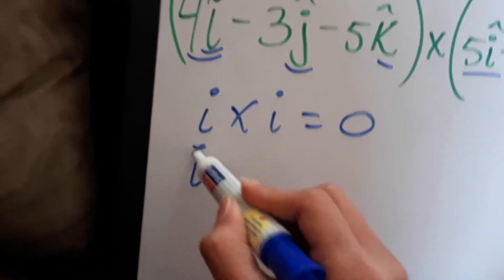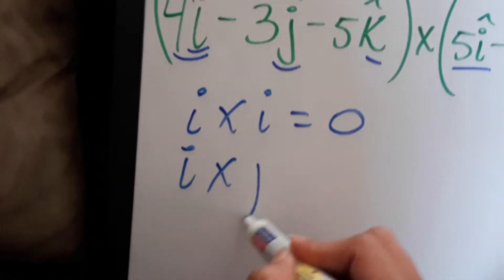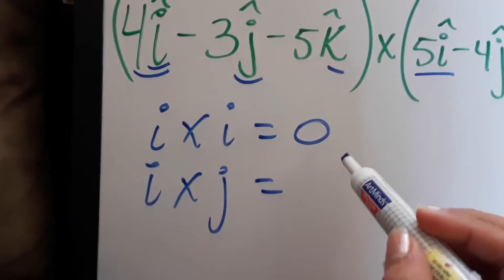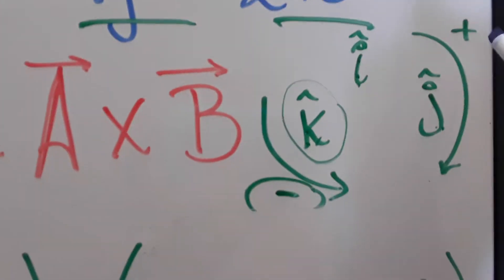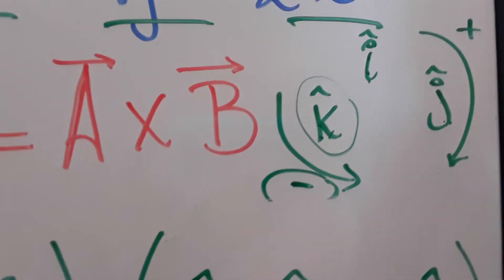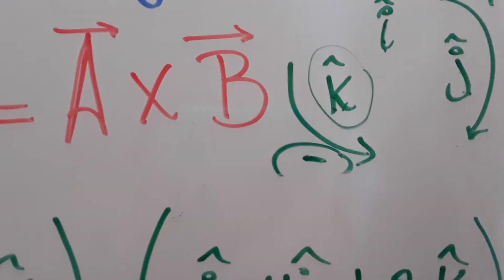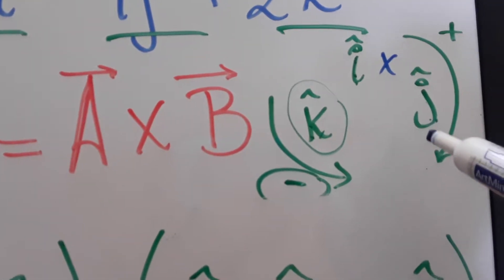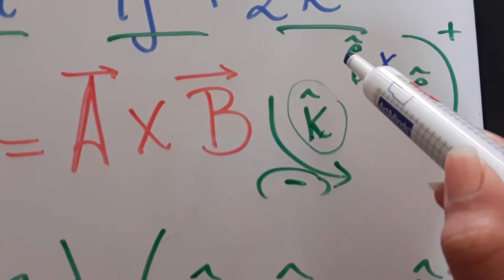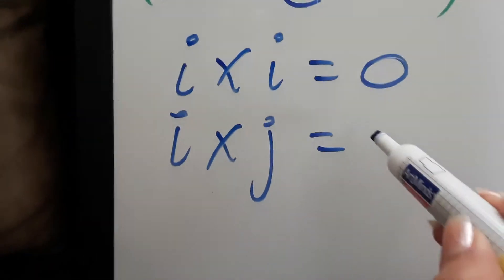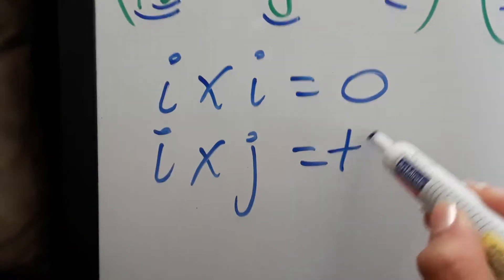So i cross j — you can see if it's a positive or a negative by just looking at this. So if we're going clockwise, we're going i cross j, that's a positive k. So this is going to be a positive k.